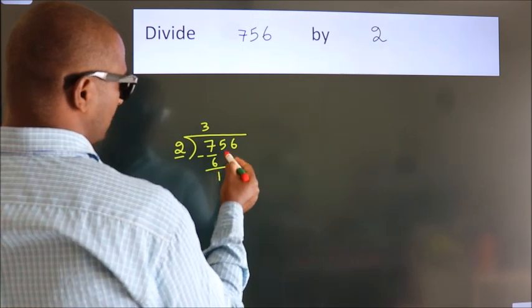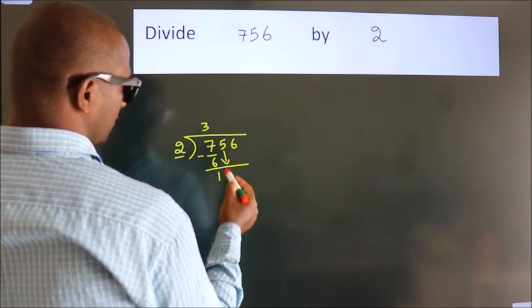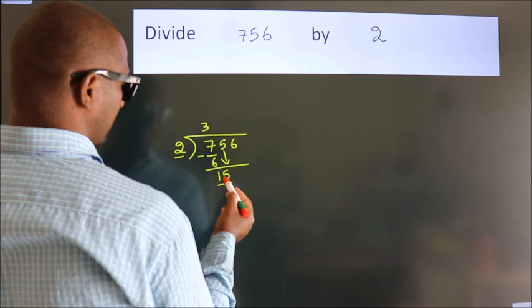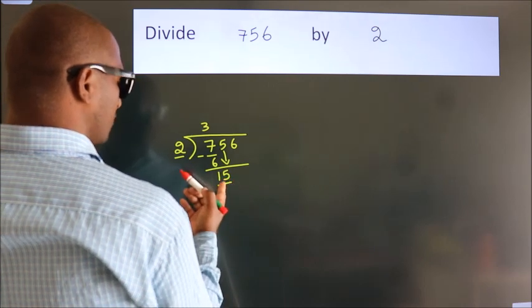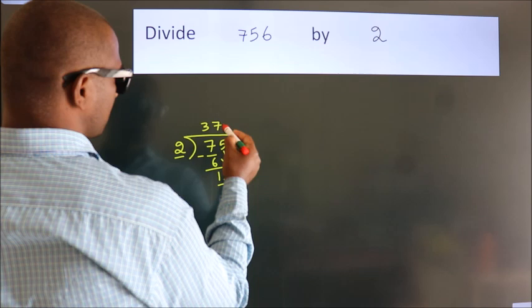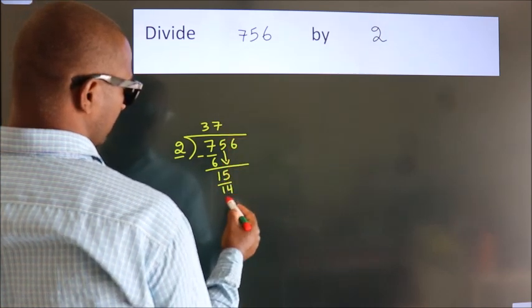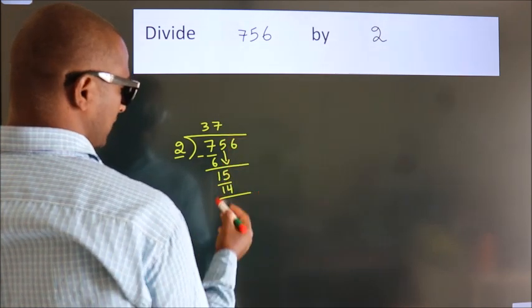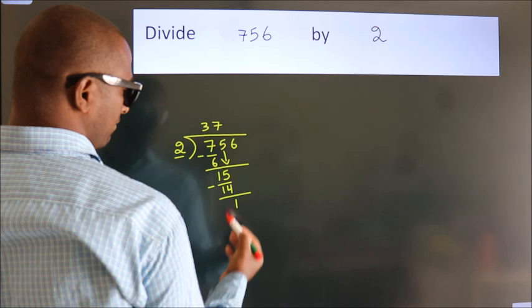After this, bring down the beside number. 5 down, so 15. A number close to 15 in the 2 table is 2 times 7, which is 14. Now we subtract and get 1.